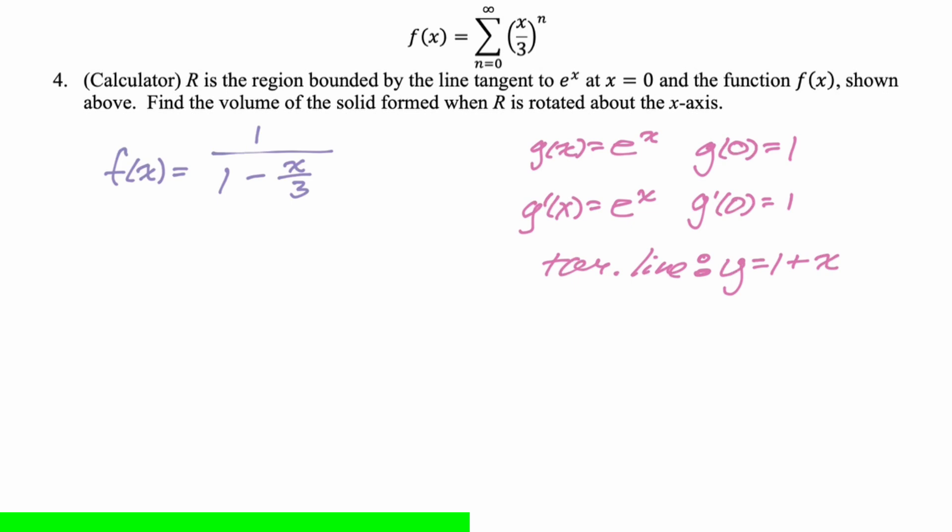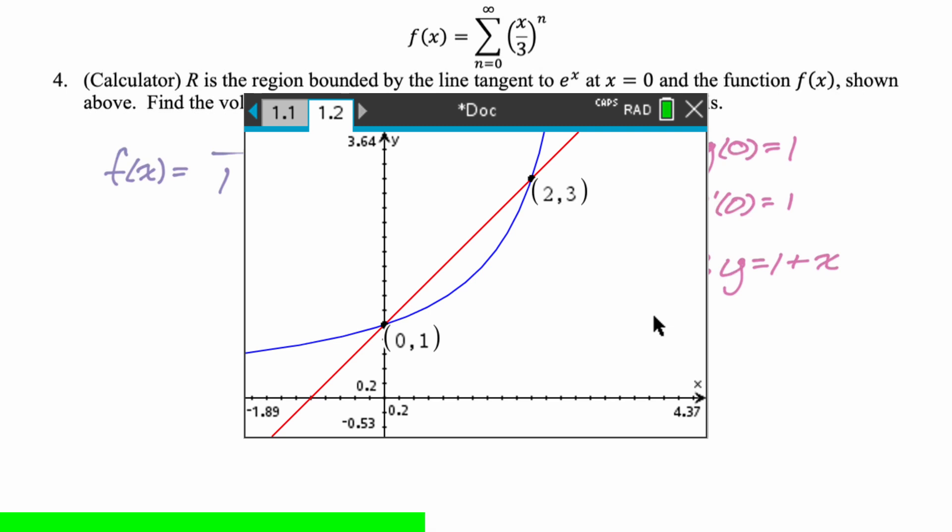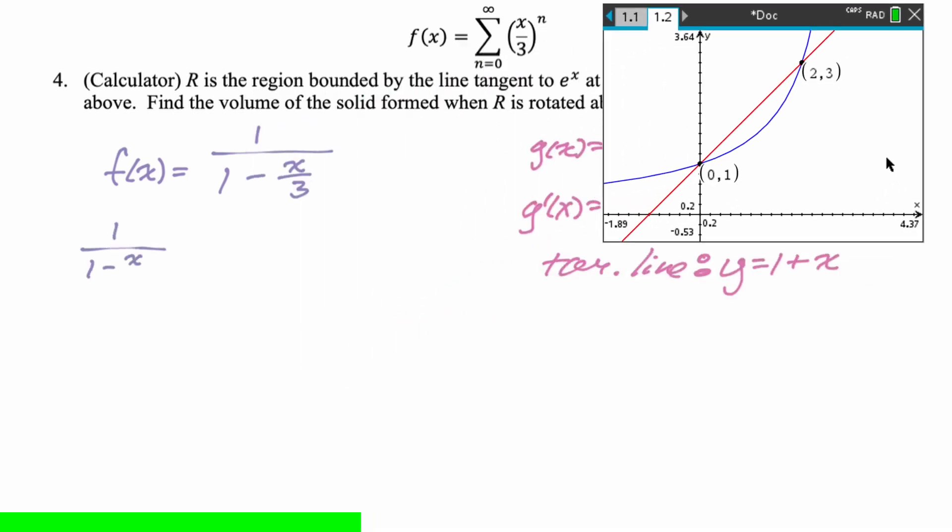So we can write our tangent line. And we'll have the two things that we need to work with. Usually I write y minus 1 equals 1 quantity x minus 0. But here I'm just writing y equals 1 plus x because it's just easier to use. Also, the first degree Taylor polynomial, which you have memorized, is the tangent line. So you actually knew that it was 1 plus x without doing that work. All right. We need to figure out where these things are equal to each other. So what I'm going to do is just pop up a calculator page, show you what that looks like.